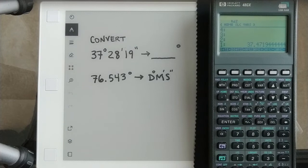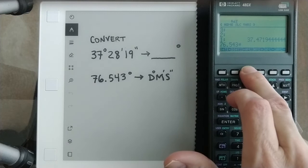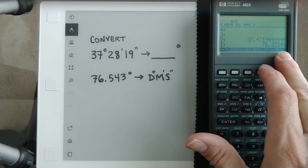So it's 37.472 degrees. And then if we want to go the other way, 76.543, that's already in degrees and we want to go to degrees, minutes, seconds. There's our answer and the way you interpret that is it's 76 degrees, 32 minutes, and 34.8 seconds.